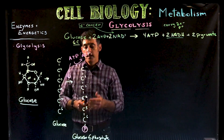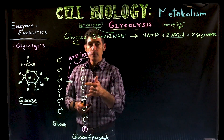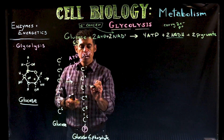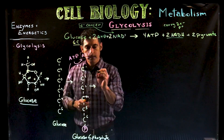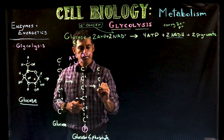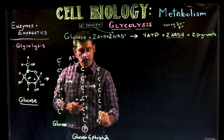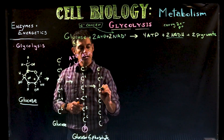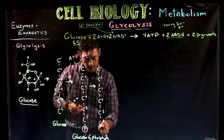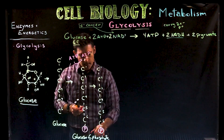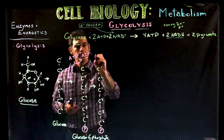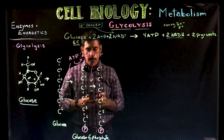The next reaction rearranges glucose into fructose. Without the oxygens and hydrogens shown, it still looks like a six-carbon molecule, but it is structurally fructose. The differences are visible in the more detailed lecture. We're going to skip that step here and move on to the second ATP that's used, which is technically the third reaction in glycolysis.